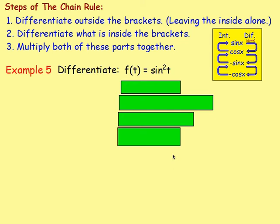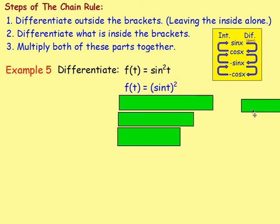Example 5: differentiate f(t) equals sine squared t. First, think about where the brackets go. You could write that as (sine t) squared — so the first thing to do is to rewrite it and include brackets. Sine squared t means sine t times sine t, or (sine t) squared.